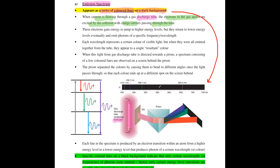If you have current flowing through your tube, you have electron flow or charge carrier flow through the gas discharge tube. The electrons that flow through will hit the electrons of the gas atoms already inside the tube, causing those electrons to jump to a higher energy level. The electrons then eventually return to a lower energy level and emit photons of specific frequency or wavelength.